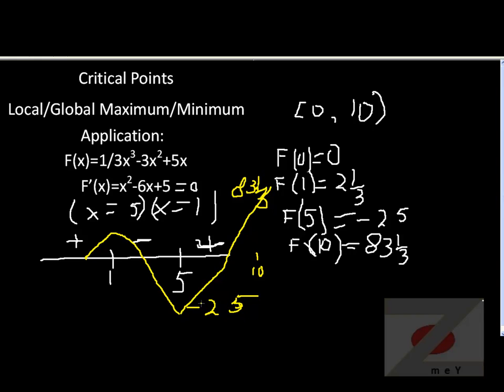Therefore, you can see that our global minimum would be at 5 and value would be negative 25. This is our global minimum. At 5, negative 25.